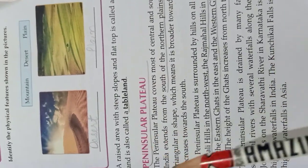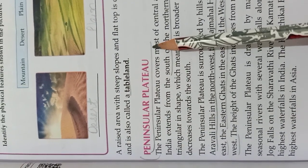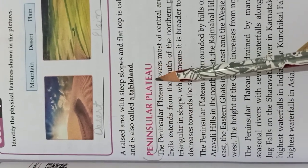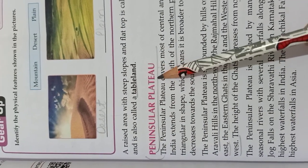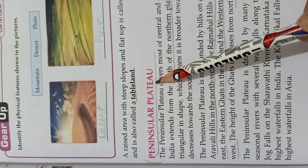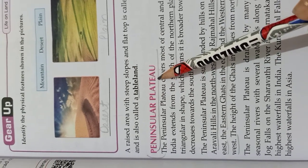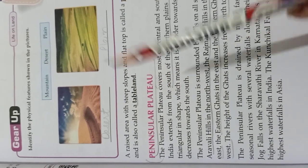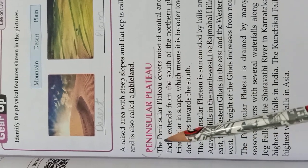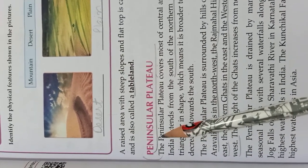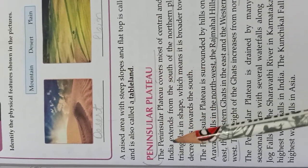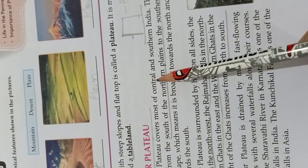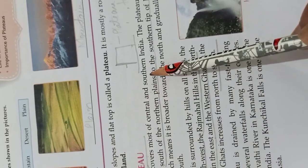Now let's discuss about the peninsular plateau. The plateaus that are covered by the big water bodies from its three sides are called peninsular plateaus. The peninsular plateau covers most of central and southern India.